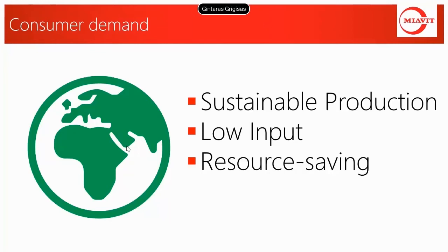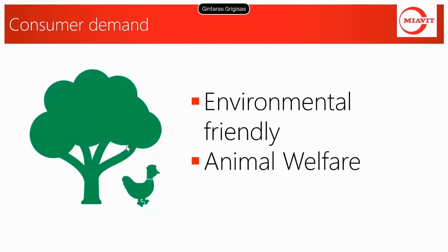One more general demand is for sustainable and resource-saving production. One parameter for this is the carbon footprint, for example. Depending on location, more and more pressure is put on environmental topics and animal welfare. There are many local regulations regarding ammonia emissions or use of manure. Animal welfare is an important issue for many people, and they are even willing to pay more for slow-growing chicken or organic meat, for example.